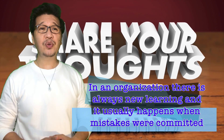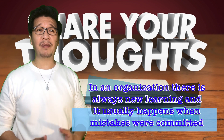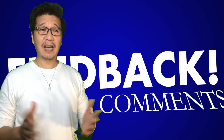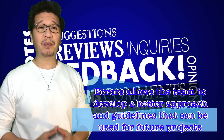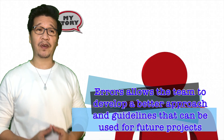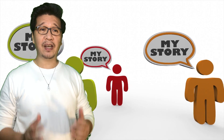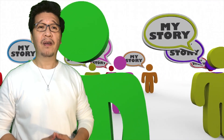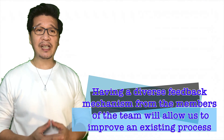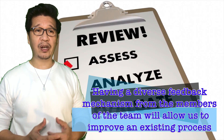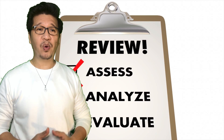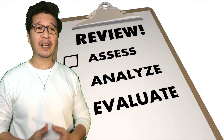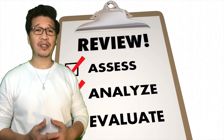In an organization, there is always new learning, and it usually happens when mistakes or programming errors are committed. Sometimes, trial and error processes allow the team to develop a better approach and guidelines that can be used for future projects. Having a diverse feedback system mechanism from the members of the team will allow us to get the needed data, which we can analyze to improve an existing process — one of the structural ways of ensuring your project is on the right track.